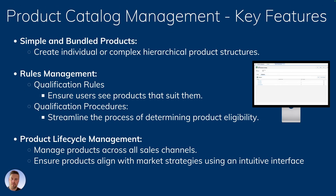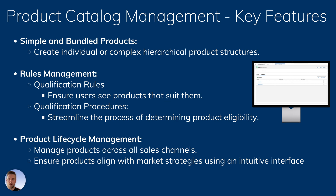You can create simple products or bundle products through product catalog management, with a new interface to build your product structure. It offers rules management with qualification rules and procedures to qualify which products show up depending on where you're selling — e-commerce, an app, or on-platform — based on account characteristics. Product lifecycle management lets you manage your products across all sales channels.